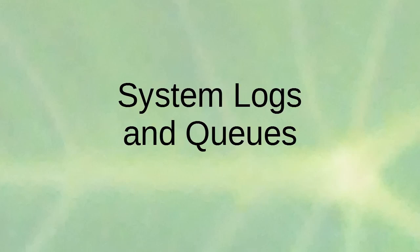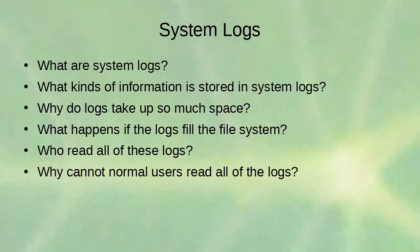System logs are basically files that store information about events that happen on your system. When something happens, it's usually sent to one of the many log files in the /var/log directory. Those files record the events and allow you to look back and see what happened in order to understand certain situations or figure out what's happening in your system.